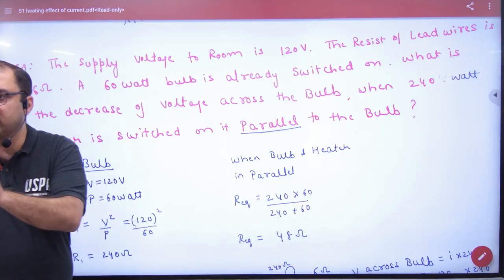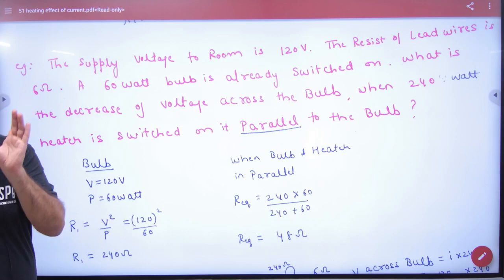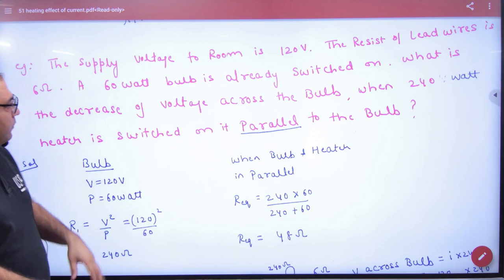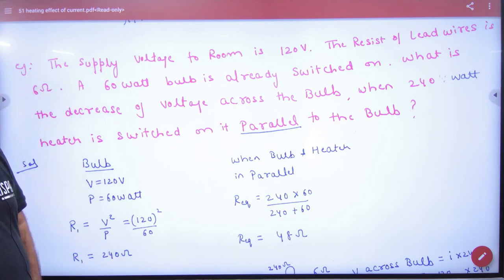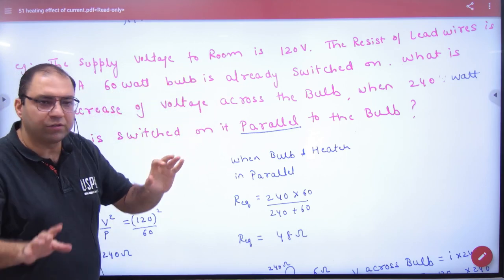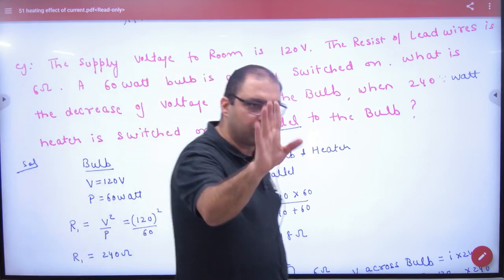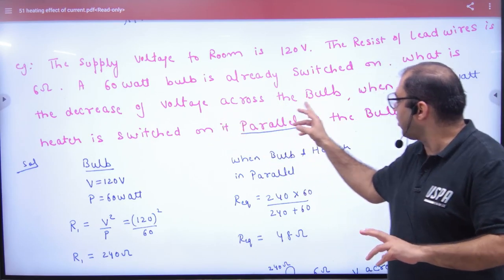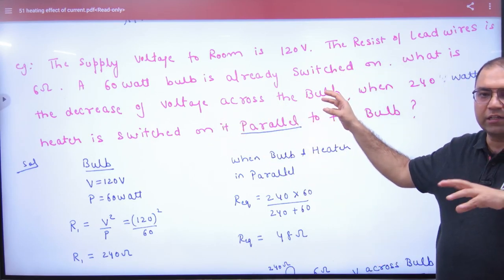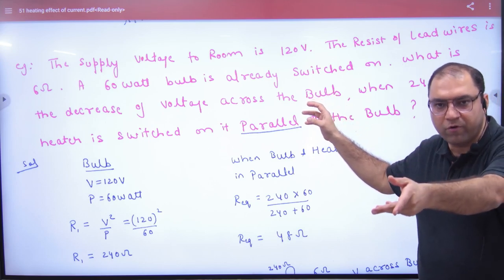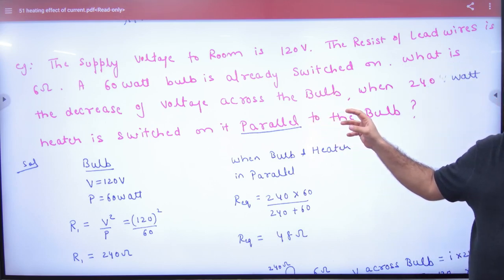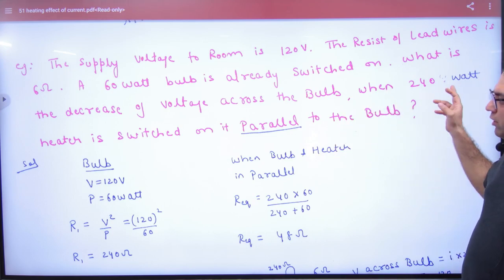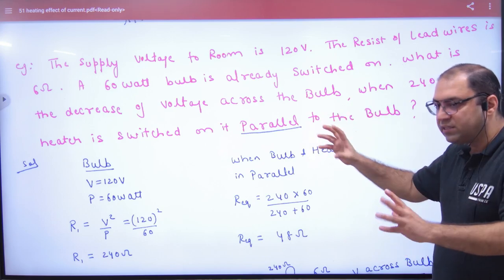The supply voltage to the room is 120 volts. The wires have 6 ohms resistance. A 60 watt bulb is already switched on in this 120 volt supply. The question is: what is the decrease in voltage across the bulb when a 240 watt heater is put in parallel with this bulb?